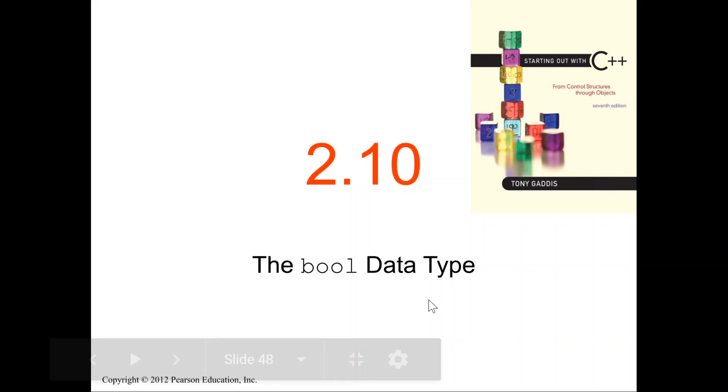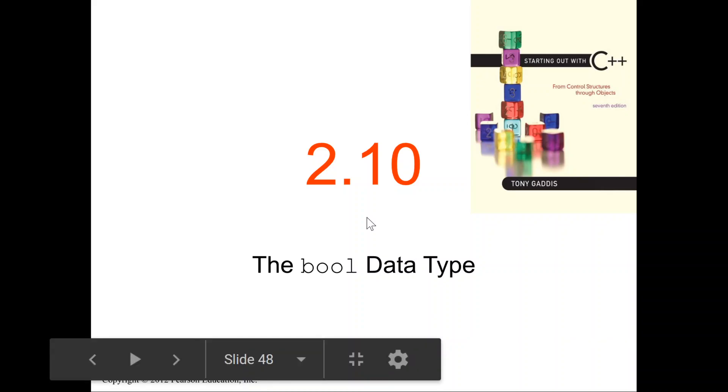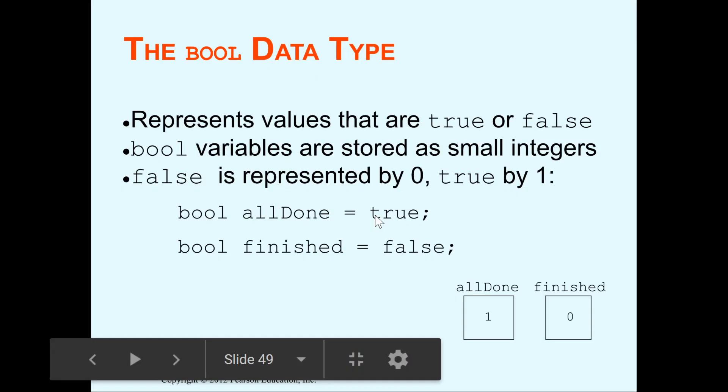How does a bool work? Let's find out. The bool works by first starting with all lowercase b-o-o-l. You type out bool. Then you give your variable a name.